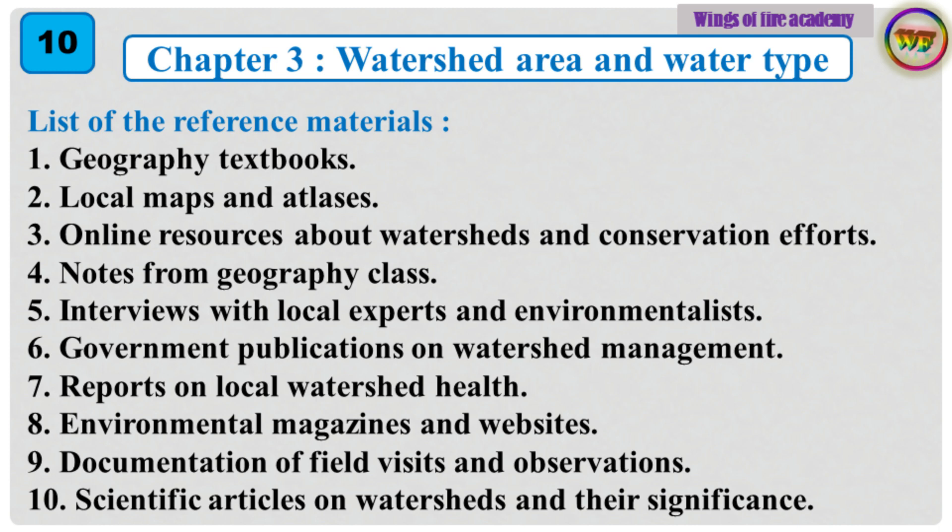List of reference materials: 1. Geography textbooks. 2. Local maps and atlases. 3. Online resources about watersheds and conservation efforts. 4. Notes from geography class. 5. Interviews with local experts and environmentalists. 6. Government publications on watershed management. 7. Reports on local watershed health.